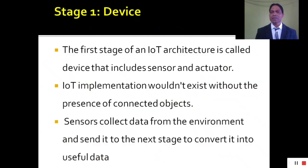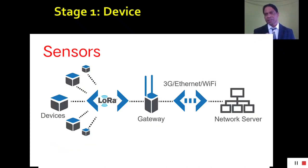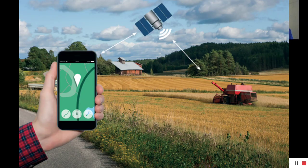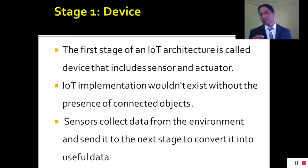So let's find out the first stage. The first stage of IoT architecture is called device, which includes sensors and actuators. IoT implementation you can't imagine without the presence of connected objects, which is the purpose of IoT networks. Sensors collect data from the environment and send it to the next stage to convert it into useful data.